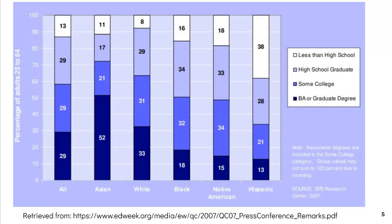Here is another chart with educational attainment by race that helps highlight an inequity. The x-axis is race and the y-axis is percent. The colors represent different levels of educational attainment — the darkest color is a bachelor's degree or graduate degree, and with each lighter shade we see less educational attainment. We can see that many more people categorized as Hispanic have less than a high school education than all other categories.